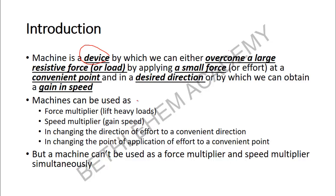To put it simply, machines are devices which can be used as a force multiplier — lifting a heavy load with a small effort — and also as a speed multiplier, where you give a small speed and get a large speed out. They can also be used for changing the direction of the effort or the point of application of the effort. However, a machine cannot be used as a force multiplier and speed multiplier at the same time; you need two separate machines for that.